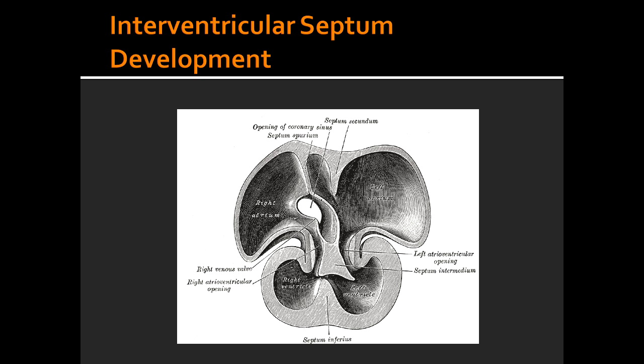What condition can arise if there is a defect in the membranous septum? If there is a membranous septal defect, it causes an initial left-to-right shunt, which later reverses to a right-to-left shunt due to the onset of pulmonary hypertension. This is called Eisenmenger's syndrome.